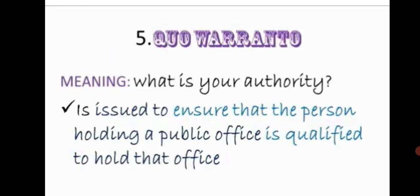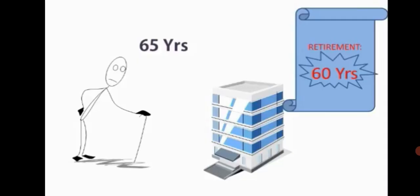The fifth and last writ is quo warranto, meaning 'what is your authority?' It is issued to ensure that the person holding a public office is qualified to hold that office, and is used to restrain a person from acting in an office to which they are not entitled. For example, if a person who is 65 years old is holding a position in public office where the retirement age is 60 years, a writ of quo warranto can be issued by the court for the removal of that person.